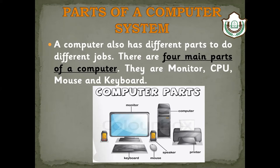Just like we use our hands and legs for different tasks, a computer also uses its parts. There are four main parts of a computer: monitor, CPU, mouse, and keyboard. Let's have a look at these computer parts and find out more about them.